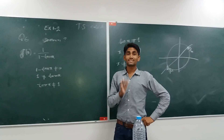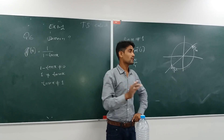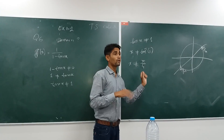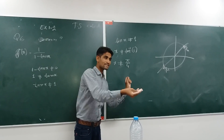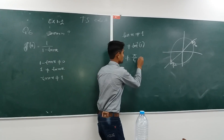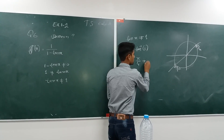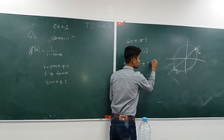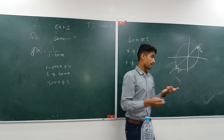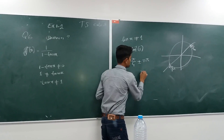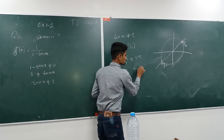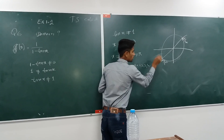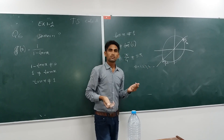So the domain is: x does not equal to pi by 4, plus or minus n times pi. And n may be equal to 1, 2, 3, and so on.